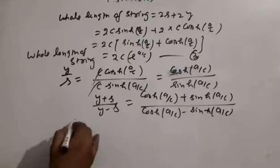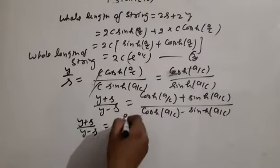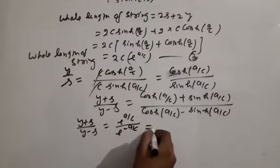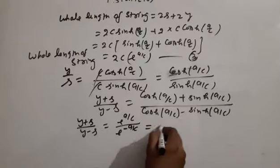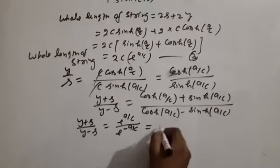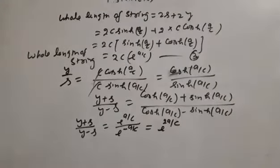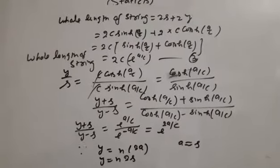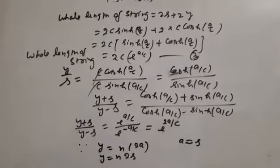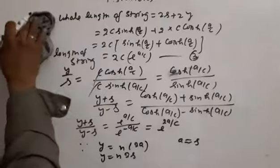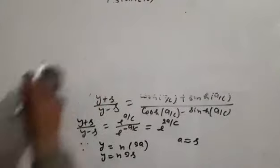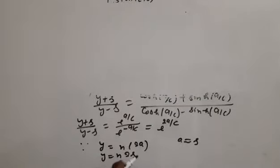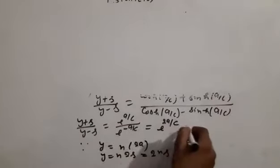By the exponential form: (y+s)/(y−s) = e^(a/c) / e^(−a/c) = e^(2a/c). Now applying the approximation: since the string is taut, a ≈ s. Given y = n·2a = 2na, we substitute y = 2ns.